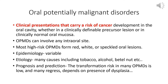Oral potentially malignant disorders are clinical presentations with an increased risk of cancer development in the oral cavity. They can be definable precursor lesions or lesions occurring in normal oral mucosa, involving various intraoral sites depending on the specific disorder, etiological factors, and the patient's age and sex. Erythroplakia is frequently seen on the soft palate, floor of mouth, and buccal mucosa.